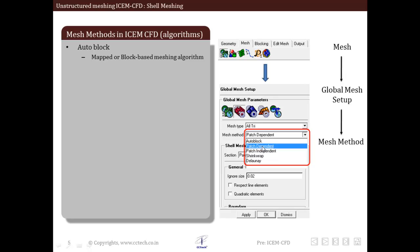We have auto block, patch dependent, patch independent, shrink wrap, and Delaunay. Auto block automatically determines the best fit. It is a block-based meshing algorithm.